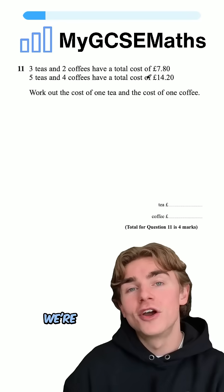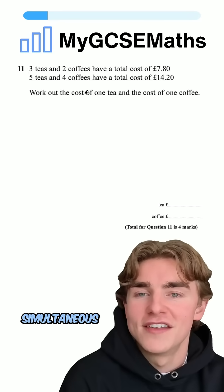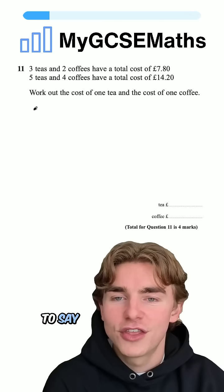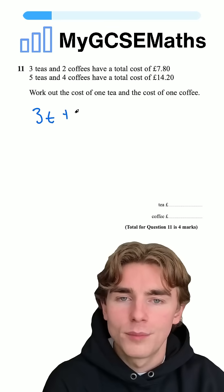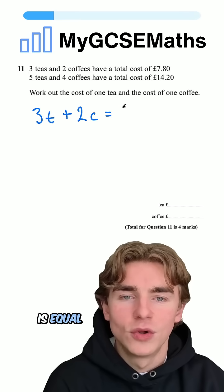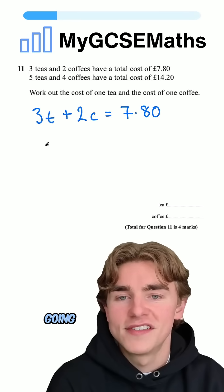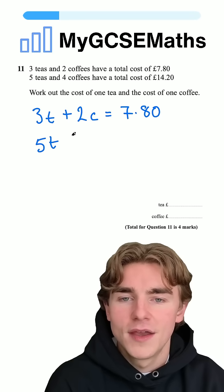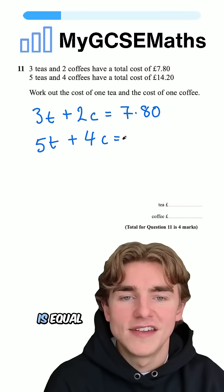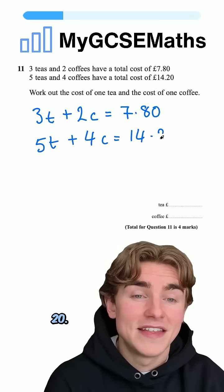What are we going to do? In this case, we're going to set up a pair of simultaneous equations. So we're going to say that 3t plus 2c is equal to £7.80 and we're also going to say that 5t plus 4c is equal to £14.20.